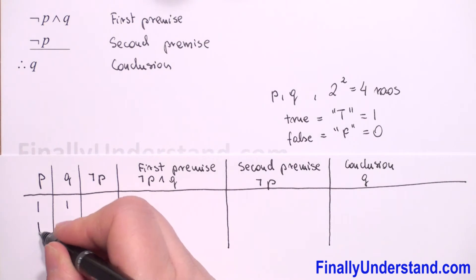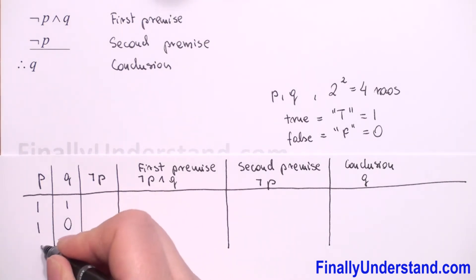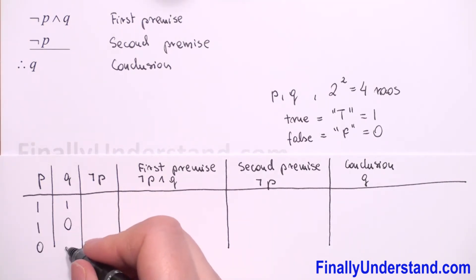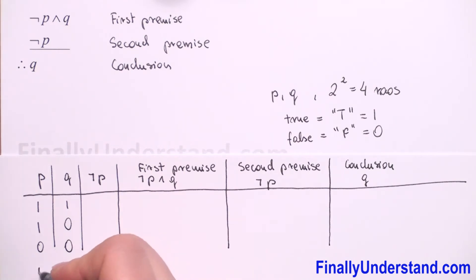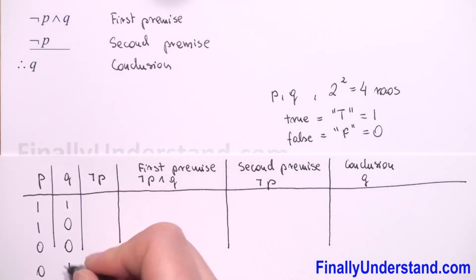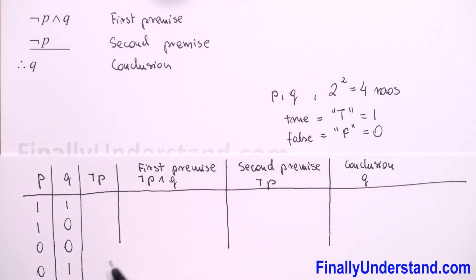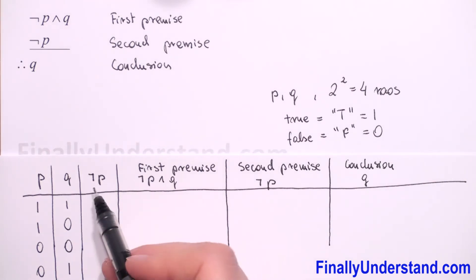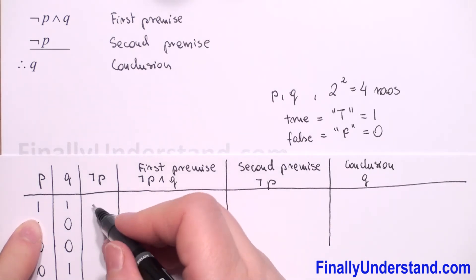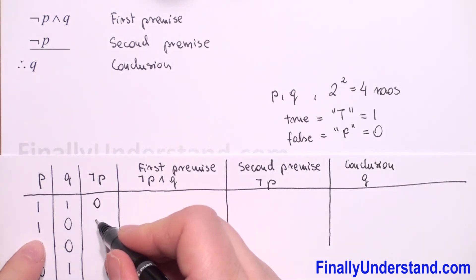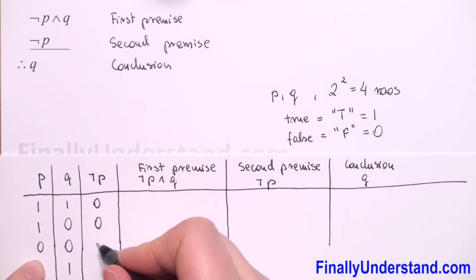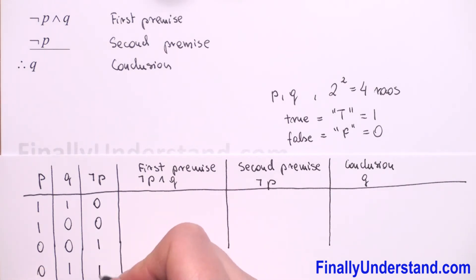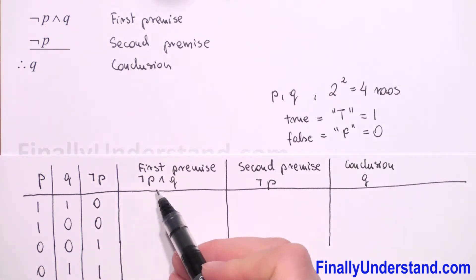Now first we have to write all combinations of p and q. P can be true, q true; p true, q false; p false, q false; and p false, q true — we have four combinations. Next we need to find not-p: not-1 is 0, not-1 is 0, not-0 is 1, not-0 is 1.